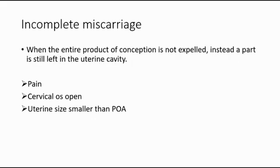The third type of miscarriage is incomplete miscarriage. This is when the entire product of conception is not expelled; instead, there is still a part of the conception left in the uterus. For incomplete miscarriage, there is pain and cervical os is open, but the uterine size is smaller than the period of amenorrhea because part of the conceptus has already been passed out.